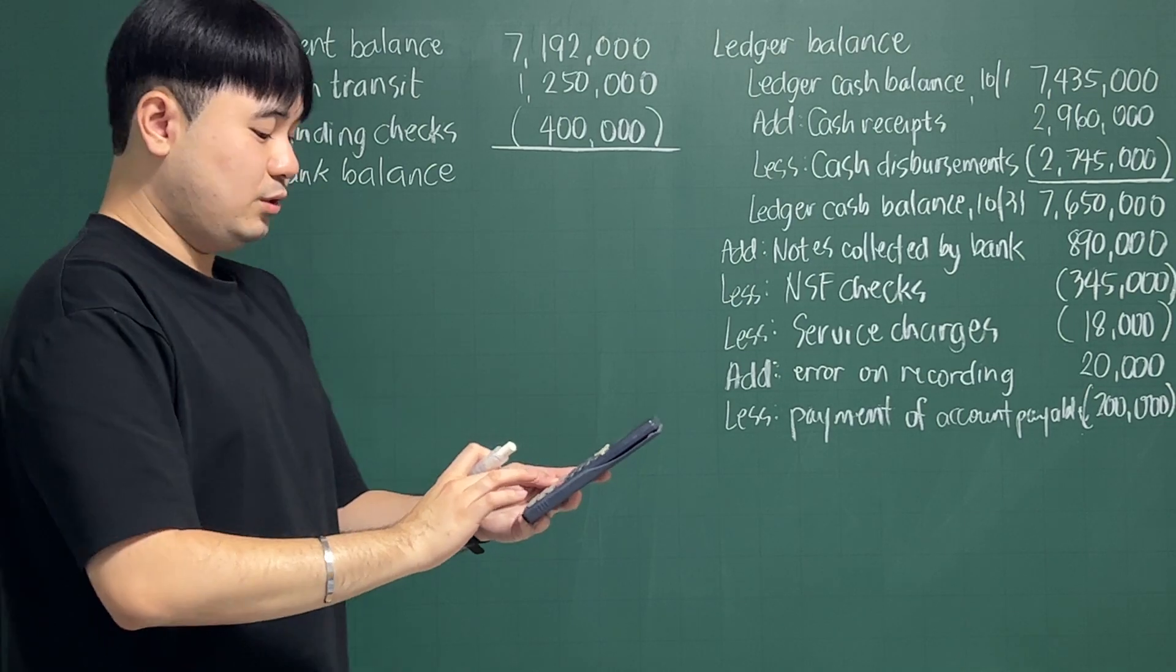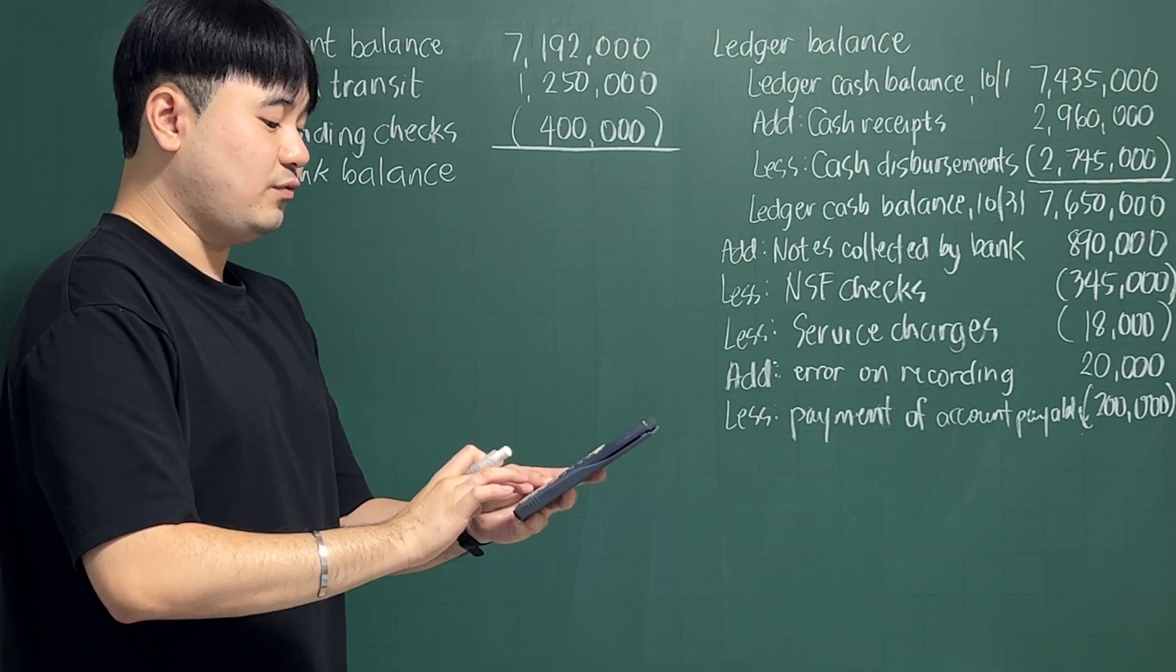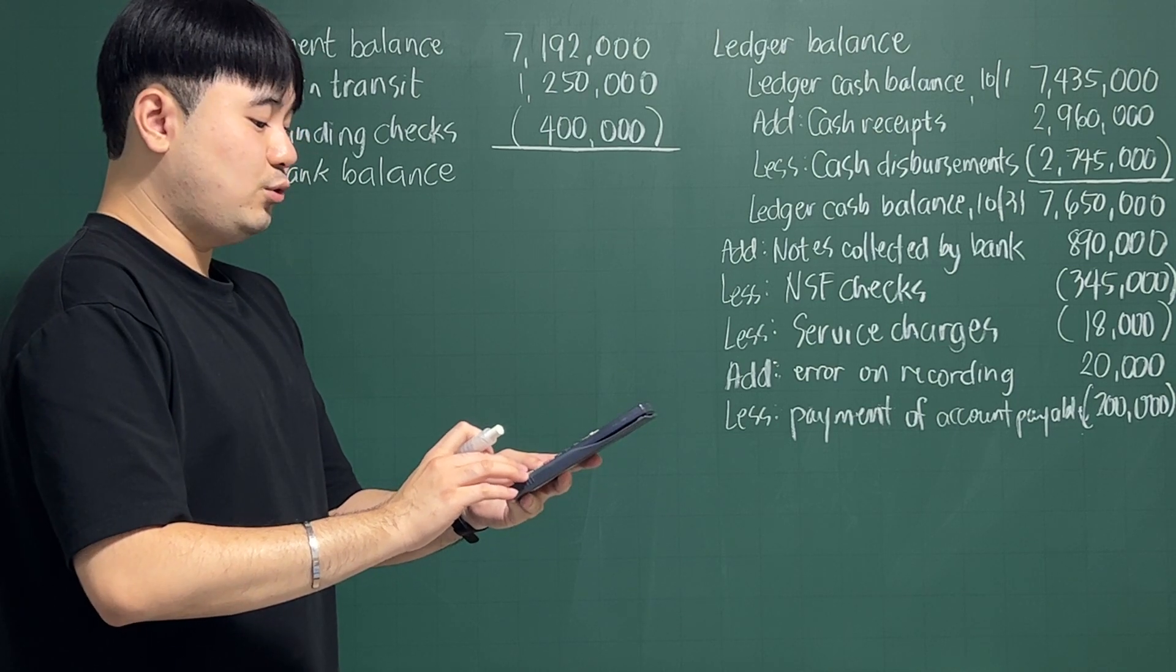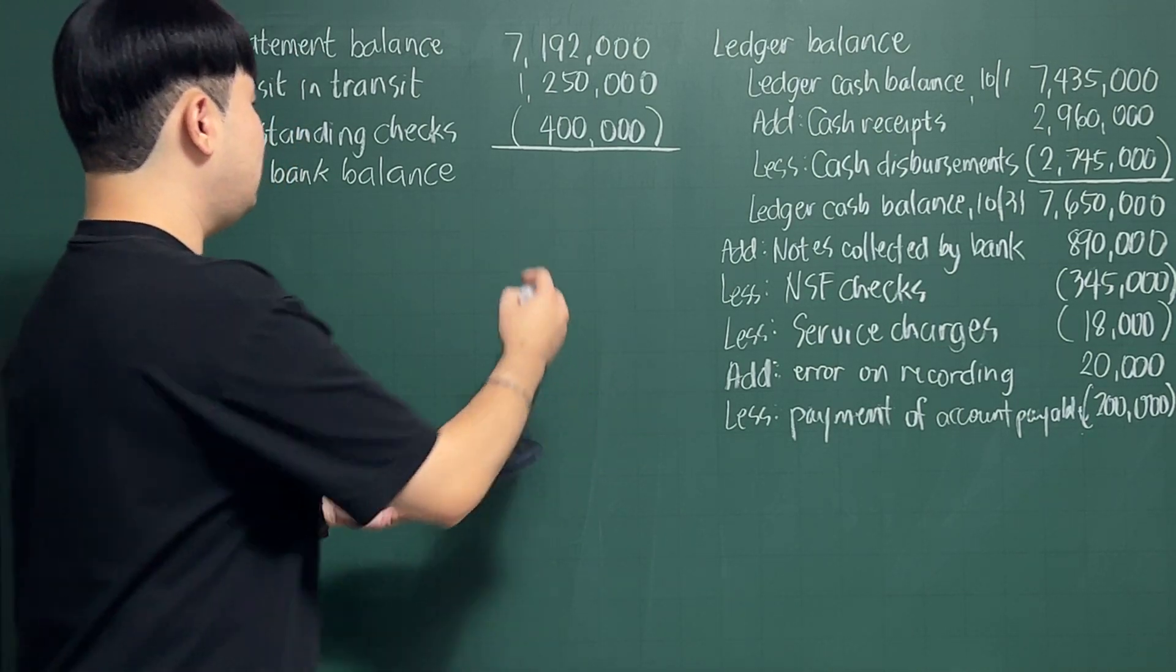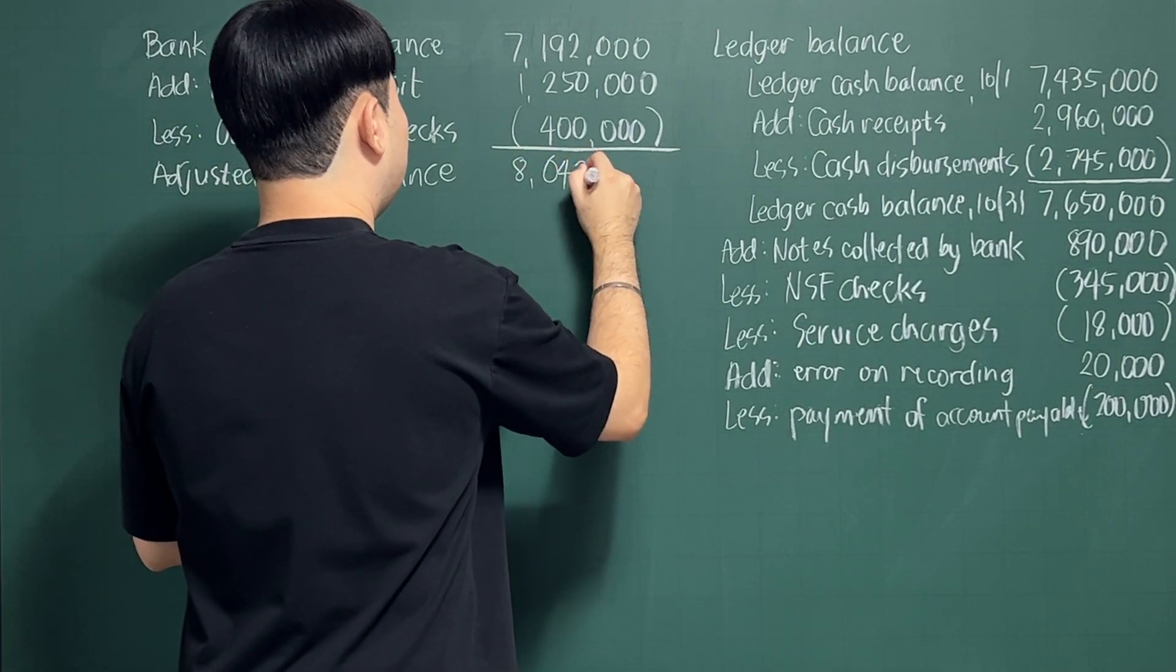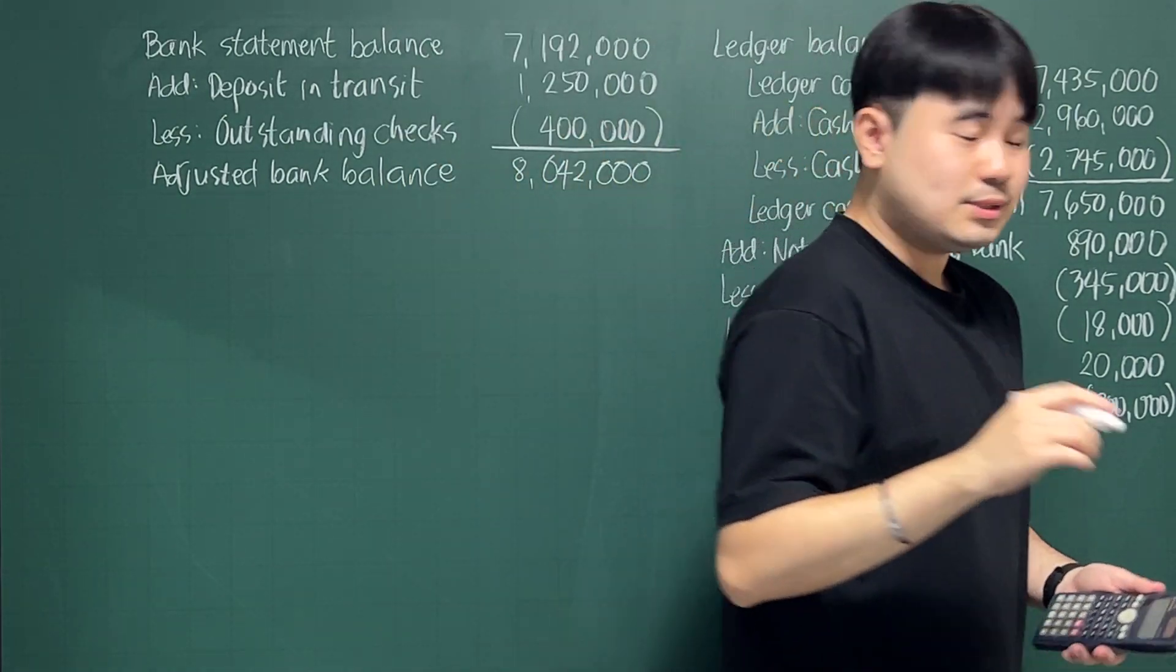So $7,192,000 plus $1,250,000 minus $400,000. Your adjusted bank balance is $8,042,000.